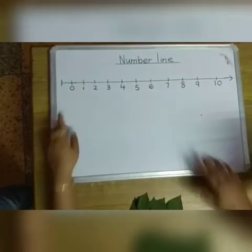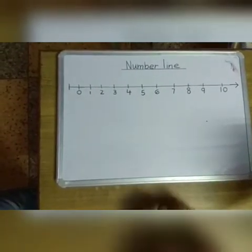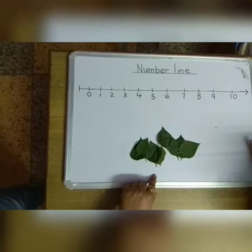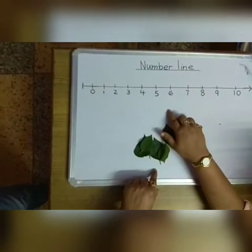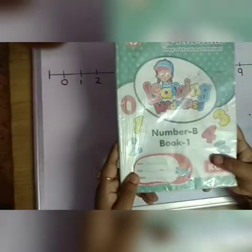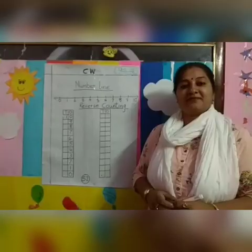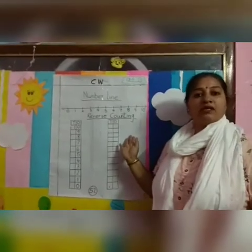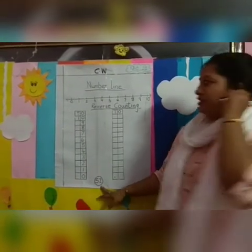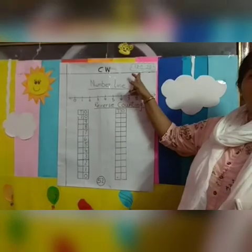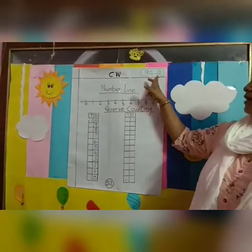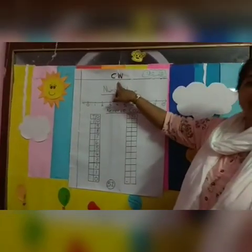No more leaves here. So children, we have learnt reverse counting with the help of this activity. Now we will do this reverse counting on page number 52 of Learning Made Easy, number B. Let's get started. Children, this is my board. Today's classwork — we will do page number 52. So children, take your page number 52. First, we will write today's date. Today is 13 August 2020. Now we will write classwork.